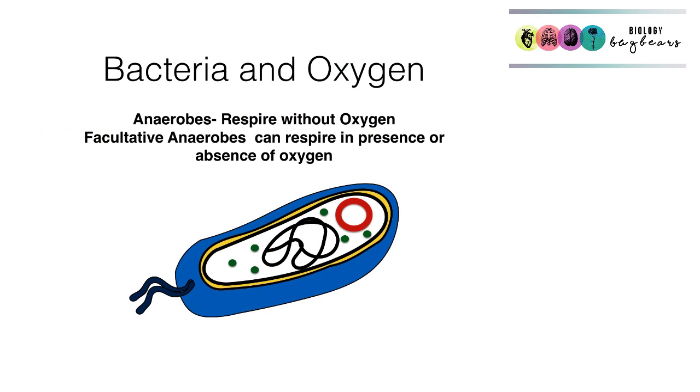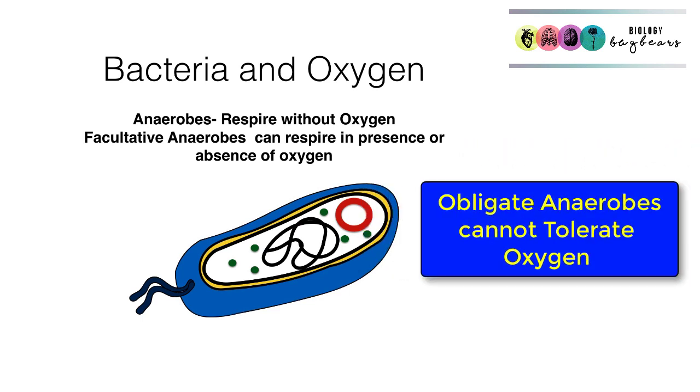It's important to look at the relationship between bacteria and oxygen. Anaerobic bacteria respire without using oxygen, so they don't need oxygen to live. Then we have those facultative anaerobes that can respire with or without oxygen. Then we have those obligate anaerobes where they cannot tolerate oxygen and oxygen can actually kill them.